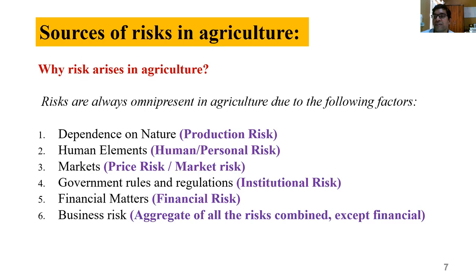Then human elements: in agriculture we use manpower to a great extent. Labor may be efficient or inefficient; a farmer can take efficient or inefficient decisions, or the timing of a decision may go wrong. So we have human and personal risk.